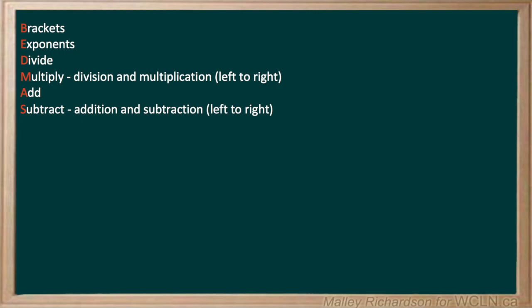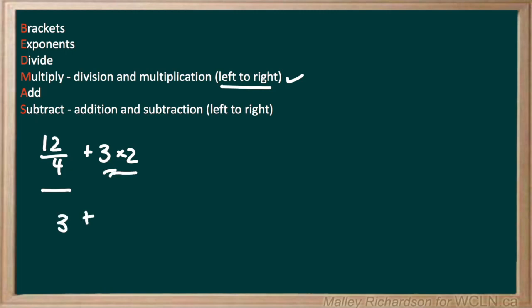Our next question is 12 over 4 plus 3 times 2. This problem has division and multiplication, so that means we have to apply these from left to right. So from the left, 12 divided by 4 gives us 3, and then to the right is 3 times 2, which gives us 6. So 3 plus 6 gives us a final answer of 9.